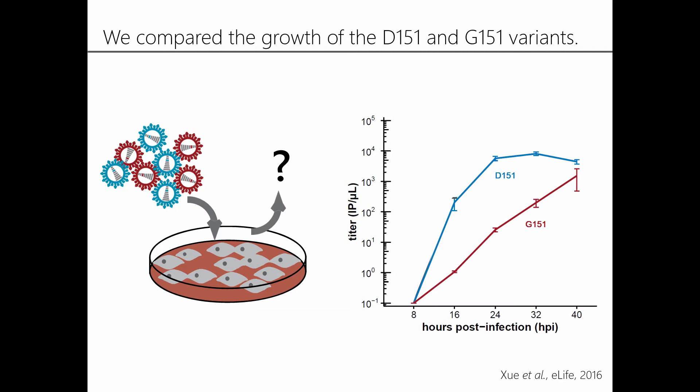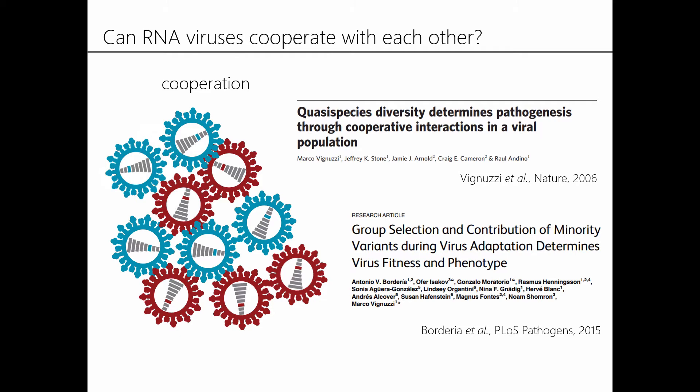We decided to try growing these viruses in a mixture — specifically, we assayed the growth of a 50-50 mixture of these two viral variants. And to our surprise, we found that this mixture of two viral variants actually outgrows either pure viral population. In other words, it seems like these two viruses are able to grow better together than they can apart.